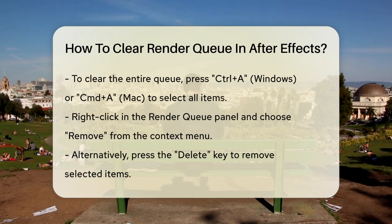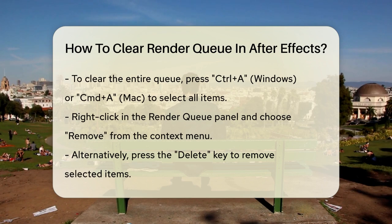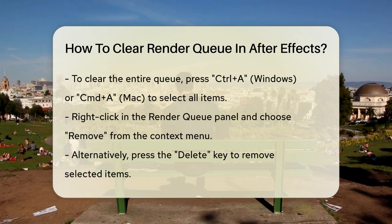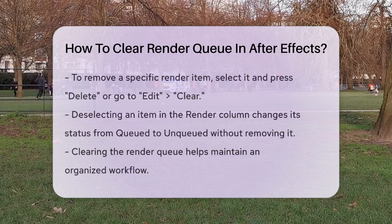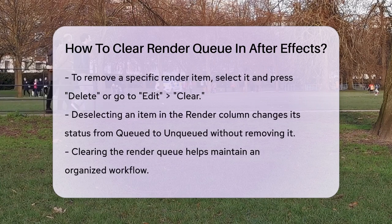To clear the entire queue, you can select all the items by pressing Ctrl-A on Windows or Command-A on Mac. This will highlight all the items in the queue. Next, right-click anywhere within the Render Queue panel and choose Remove from the context menu. Alternatively, you can select the items and press the Delete key on your keyboard. This action will delete the selected render items from the queue.